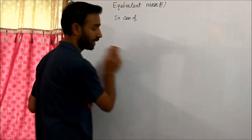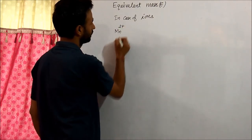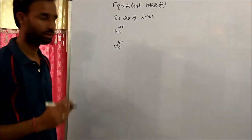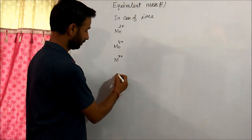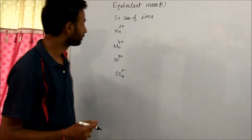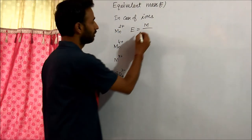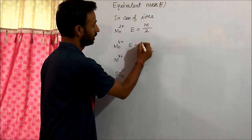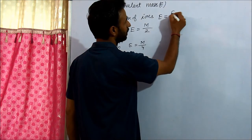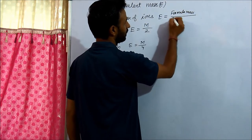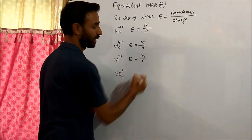In case of ions, such as Mn²⁺, Mn⁴⁺, or SO₄²⁻, the equivalent mass is the formula mass divided by the magnitude of the charge on the ion. So, for a 2-negative ion it is M by 2, for a 4-positive ion it is M by 4. In general, equivalent mass of an ion equals M divided by N, where N is the magnitude of the charge.